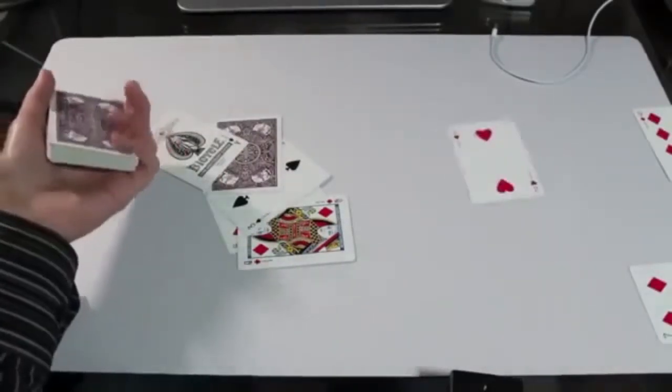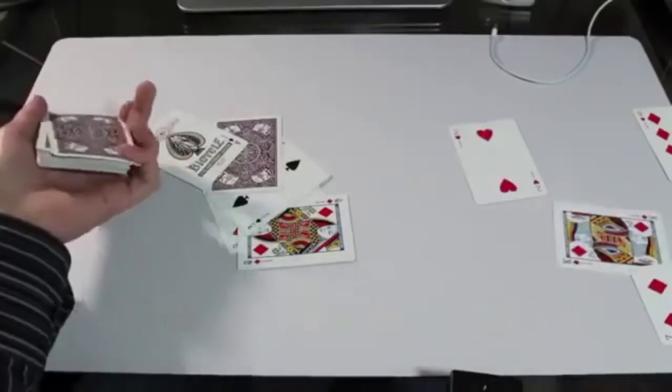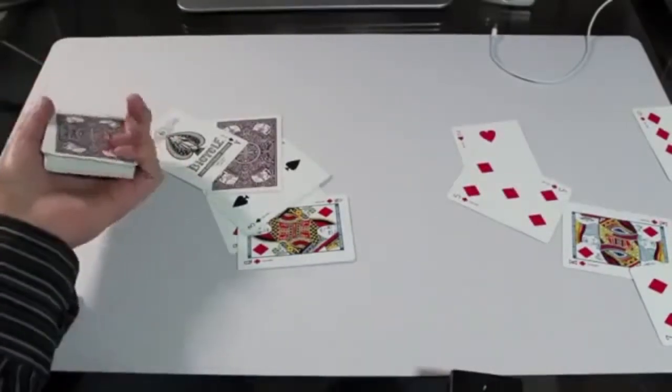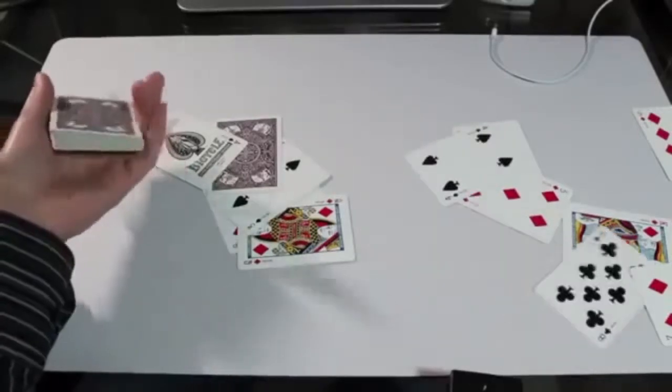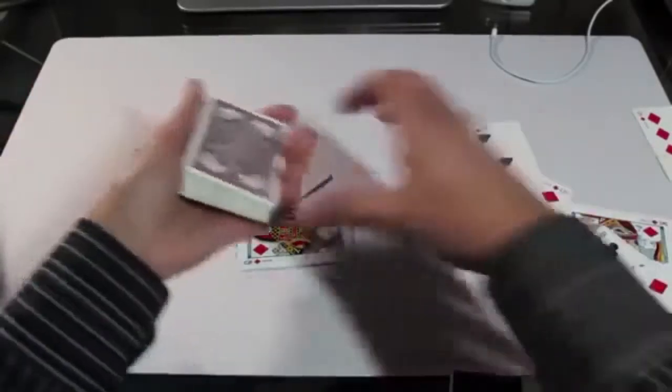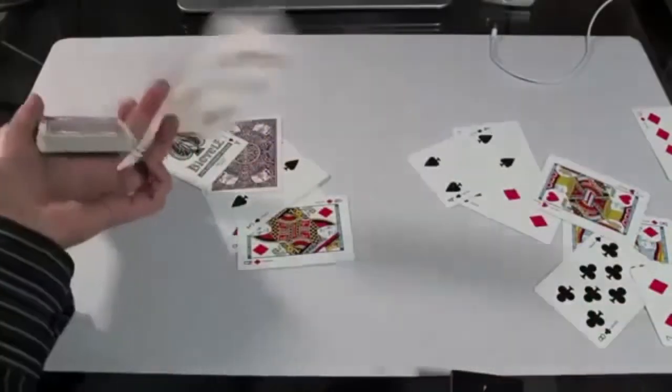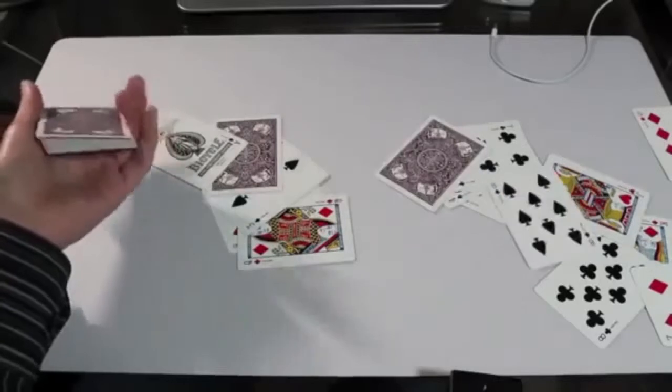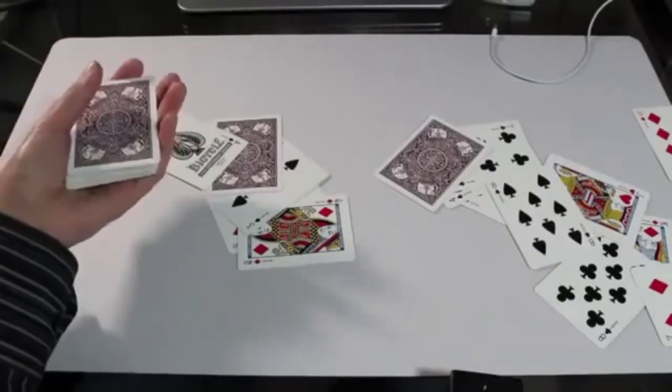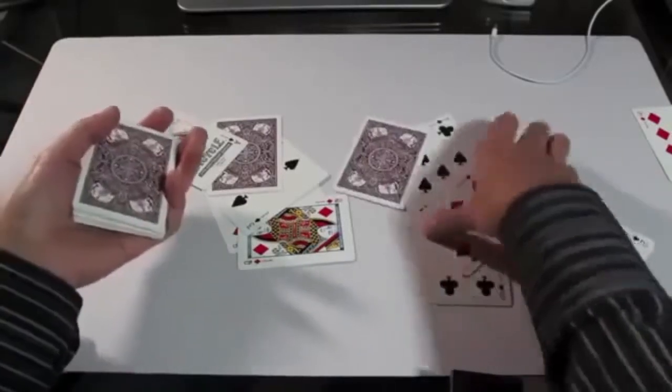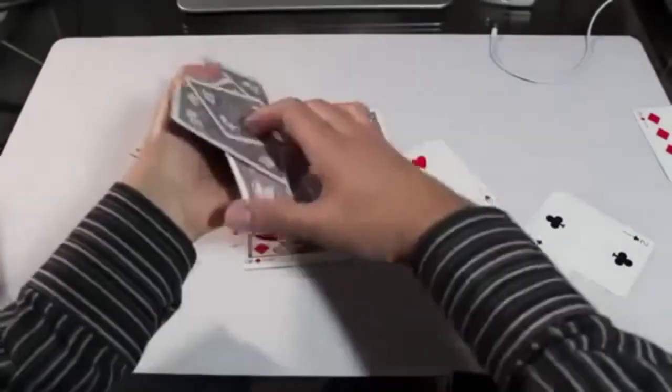So just practice this slowly at first. Don't worry about speed. Don't worry about accuracy or anything like that. Just one at a time, practice shooting the cards. And when you're first starting out, you might have to readjust the grip after each shot. You will notice how it becomes more and more difficult with the less cards you have. So every now and then you're going to want to collect the cards and start with the full deck again.